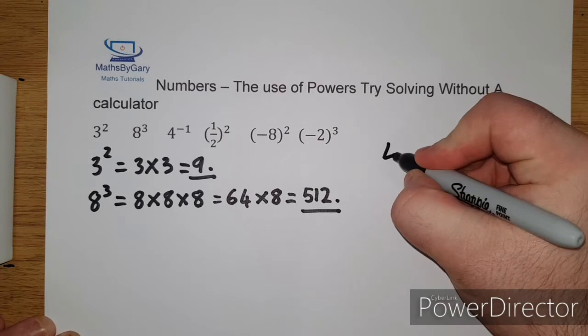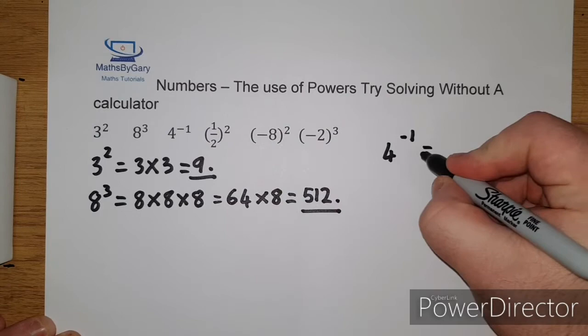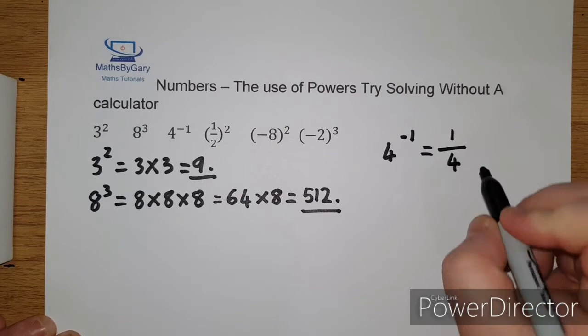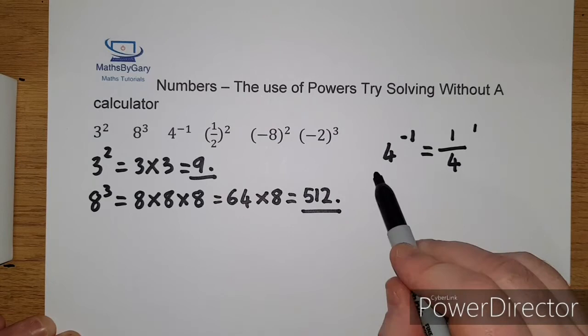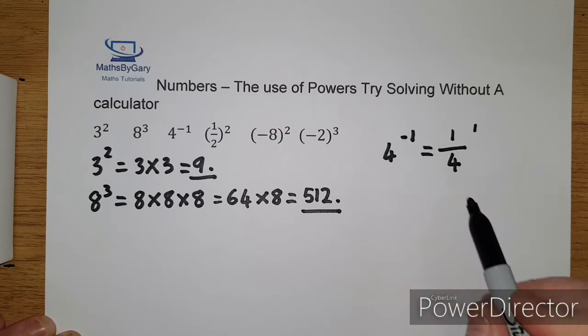So we'll move on to the third example which is 4 to the power of minus 1. What we can do here is we can divide: 1 divided by 4 and then we change the power to positive 1. So all I've done is divide by 1 over 4.